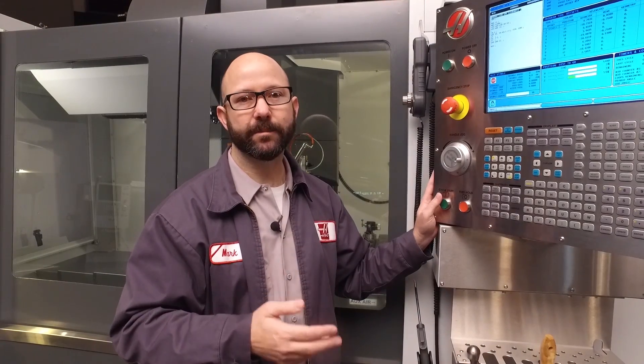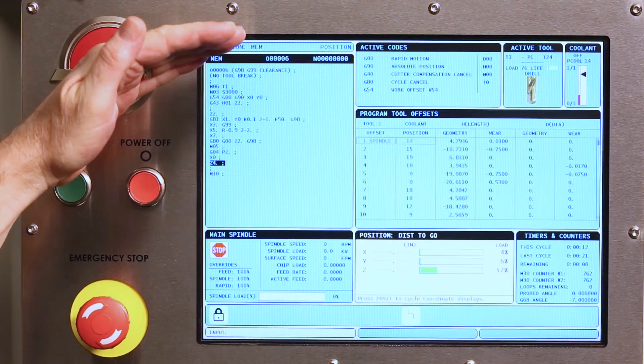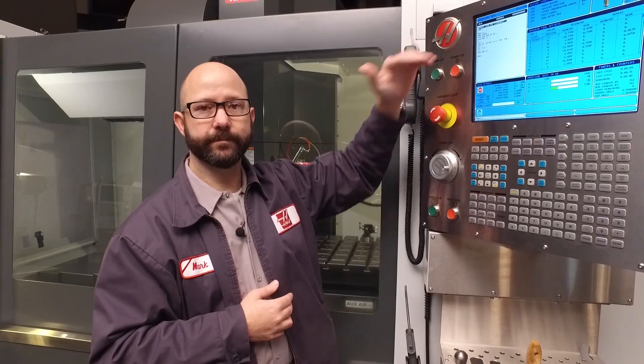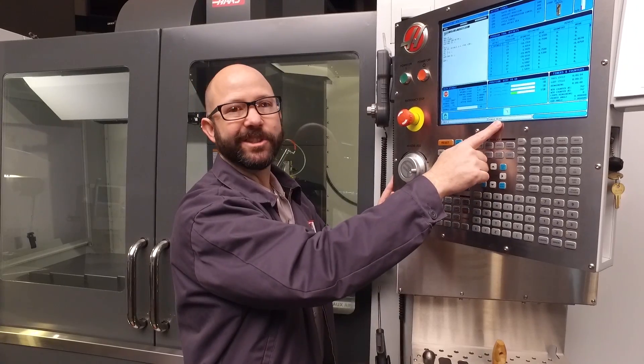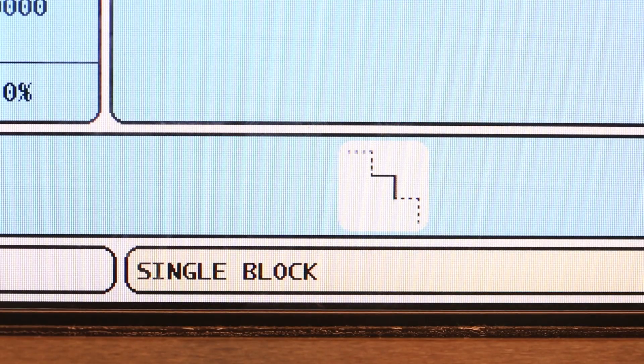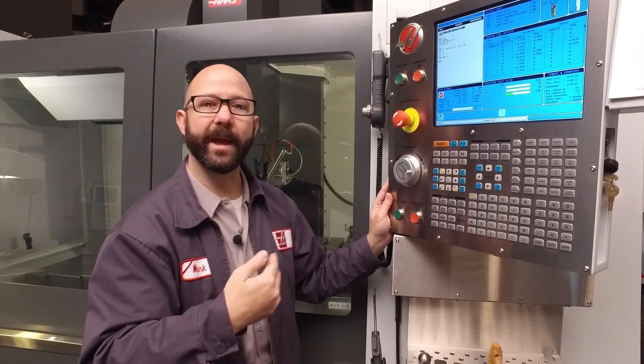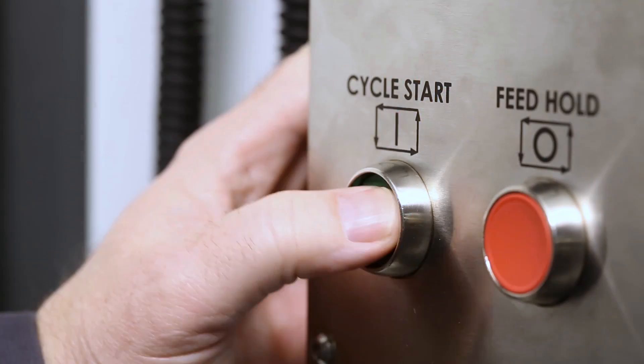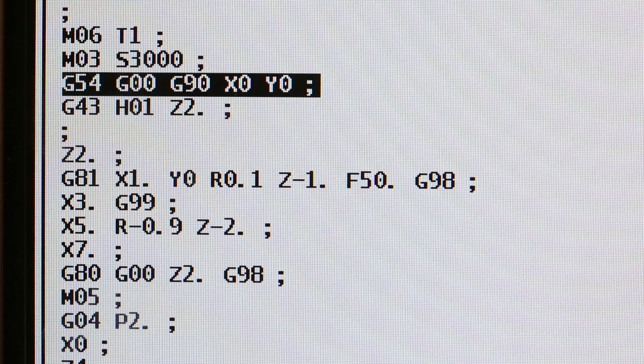Now when we say block, we're typically talking about a single line of code in our program. So when I press a single block button and the single block icon appears on my screen, this means that from now on, with each push of cycle start, the control will execute one line of code.